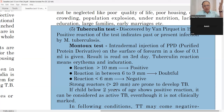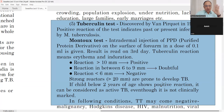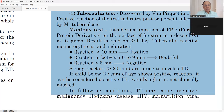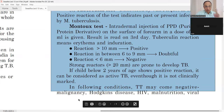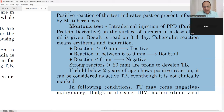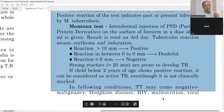In children below 2 years of age, a positive reaction can be considered as active tuberculosis, even without clinical symptoms like cough, fever, or weight loss. In some conditions, the test may be falsely negative — the patient may have TB but the reaction will be negative. This occurs in malignancy, cancer, Hodgkin's disease, AIDS, HIV, malnutrition, and viral conditions such as measles and chickenpox. Immunosuppressive drugs like steroids can also cause false negative results.